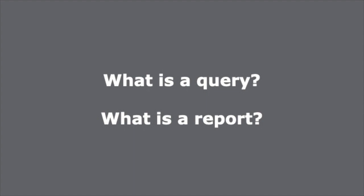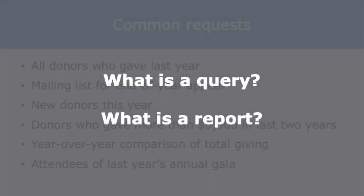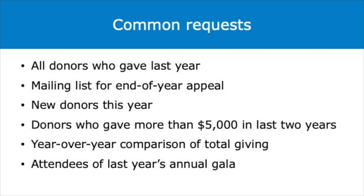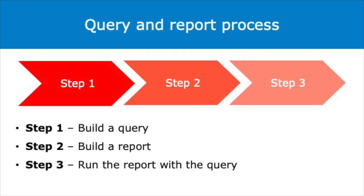To explain the differences between queries and reports, we need to start at the end of the reporting process. When someone in your organization is curious about fundraising or donor data, they might ask for all donors that gave last year, a mailing list for the end of year appeal, a list of new donors this year, major donors that gave more than $5,000 in the last two years, year-over-year comparison of total giving, or attendees for last year's annual gala. You ultimately want to create an export of data to Excel or formatted PDF, so you start with the reports feature in eTapestry. But in eTapestry, the reports feature alone won't get you the final Excel or PDF export you might expect. What you might think of as a report is actually a three-step process that includes both a query and a report.